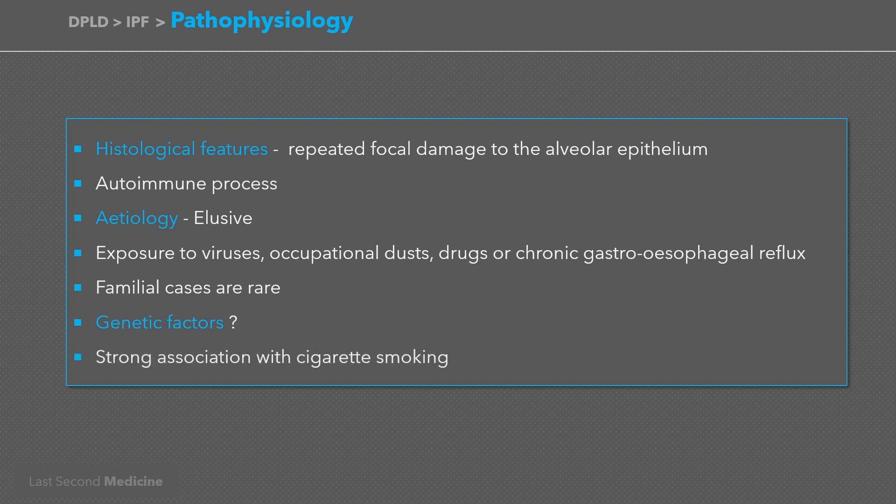There is a strong association with cigarette smoking. Cigarette smoking is also important because once the patient is diagnosed with idiopathic pulmonary fibrosis, smoking poses a risk for the development of lung cancer.